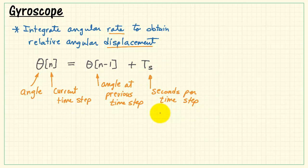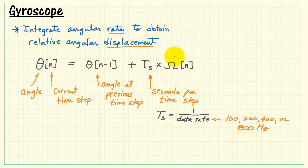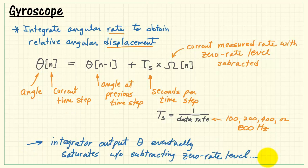We need seconds per time step, and that would be the reciprocal of the data rate that we have selected. And then we multiply seconds per time step times the measured angular rate, again with this measured rate accounting for the zero rate level being subtracted. If you fail to do that, the integrator output will eventually saturate.